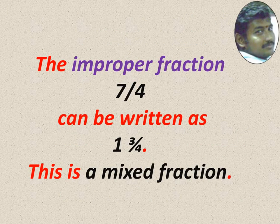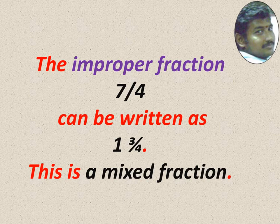The improper fraction 7 by 4 can be written as 1 3 by 4. So 1 3 by 4 is a mixed fraction. 1 is whole, 3 by 4 is proper fraction. Proper fraction numerator should be small, denominator should be a big number.